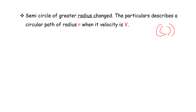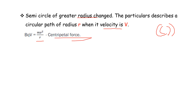The particle describes a circular path of radius r when moving at velocity v. The magnetic force BQV acts as the centripetal force. So we write BQV equals mv squared divided by r — this is known as the Lorentz force equated to the centripetal force formula.